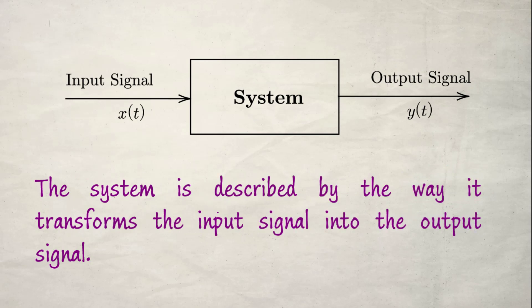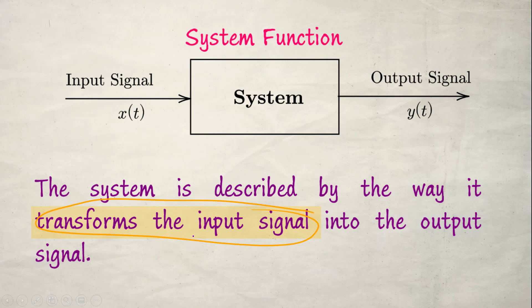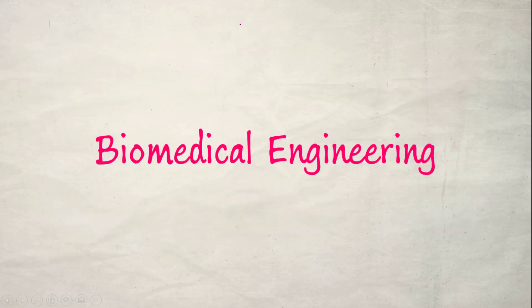Returning to our definitions: a system is described by the way it transforms the input signal into an output signal, and this transformation is based on the system function. The system function is a mathematical function which can be implemented as hardware, software, mechanical, or any kind of implementation.